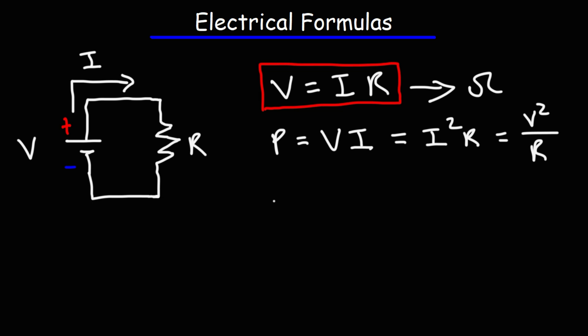The next formula you need to be familiar with is this: the electrical work done is equal to power multiplied by time. You can also think about work as energy being transferred, so the amount of electrical energy being transferred to a resistor is power multiplied by time.